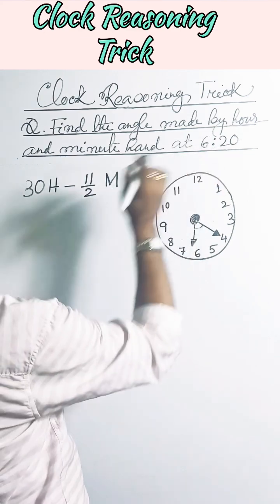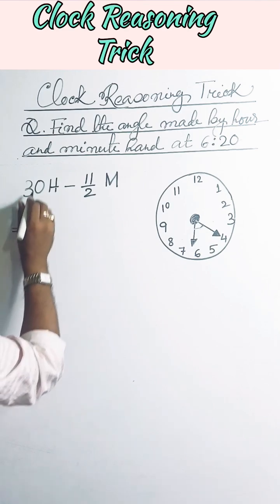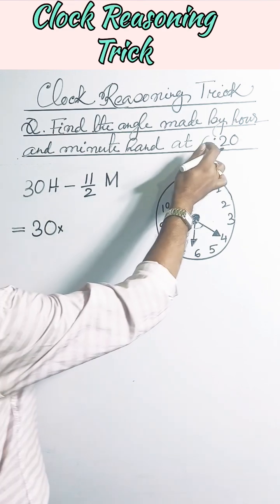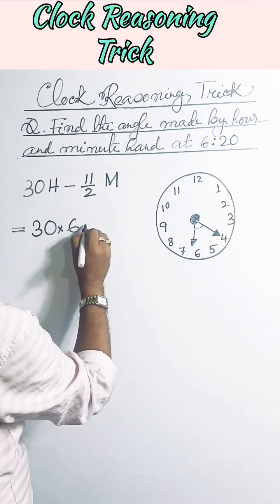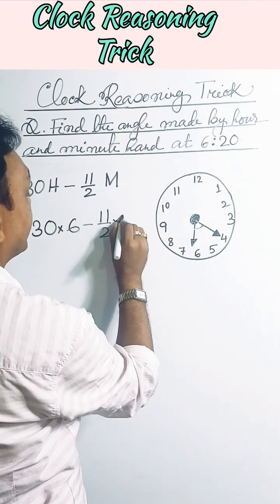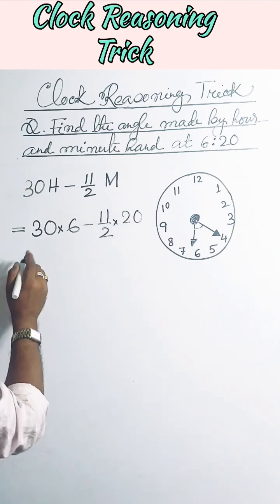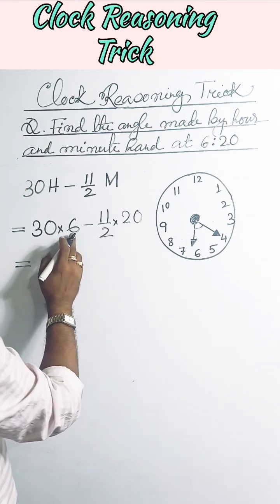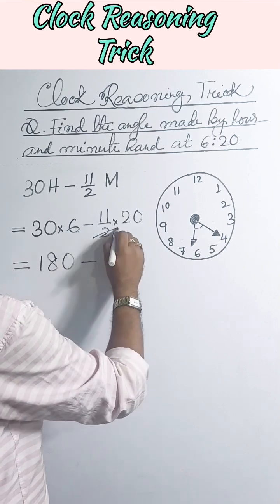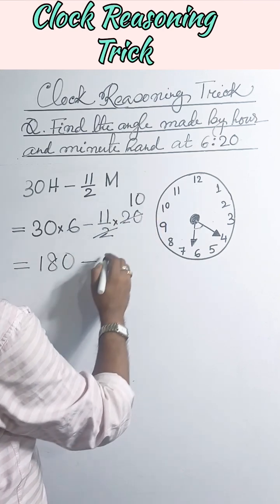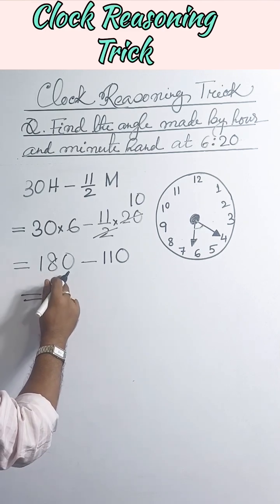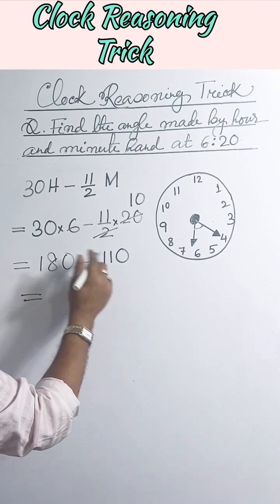Put the values in this formula: 30 times 6, then minus 11 by 2 times 20 minutes. If we simplify, you will get 180 minus - if we cancel it by 10, you will get 110. That is 180 degrees minus 110 degrees.